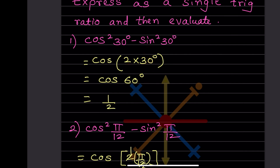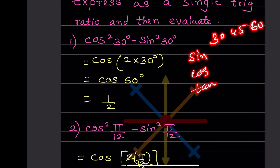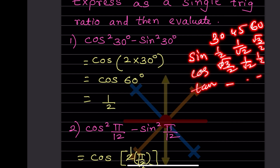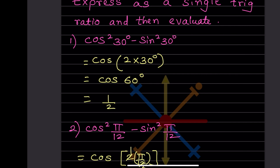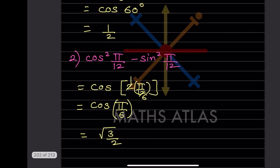Using the standard trigonometric values table for 30, 45, 60 degrees — cos60 = 1/2. So the final answer is 1/2.